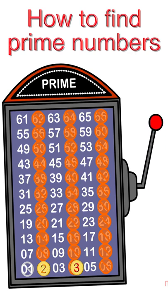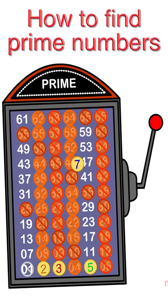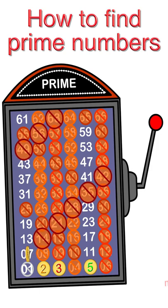The next lowest point that has not been crossed out is 3. So 3 is the next prime number. Every time a coin lands on a number, the machine will automatically eliminate multiples of the number.